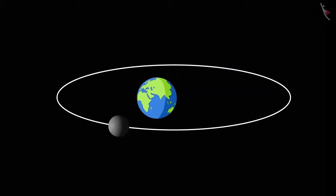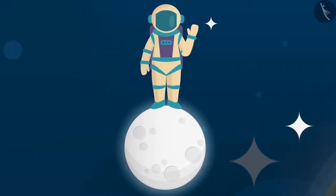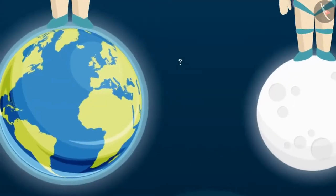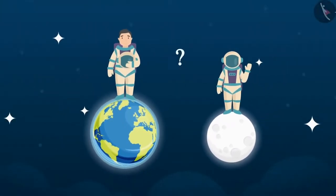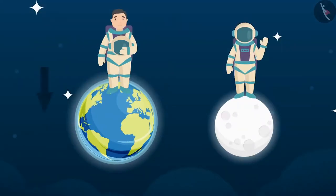Now let's take another example and see how the weight of an object varies on the Moon. Will the object be heavier or lighter on the Moon compared to when it was on the Earth? The weight of an object on the Earth is the force with which the Earth attracts the object. Similarly, the weight of an object on the Moon is the force with which the Moon attracts the object.